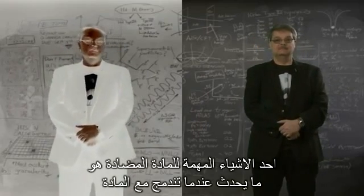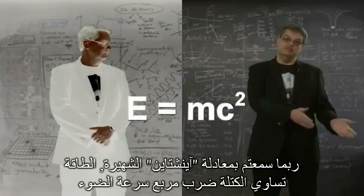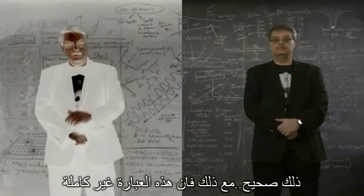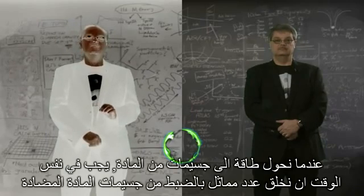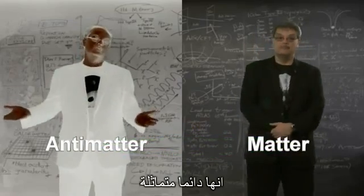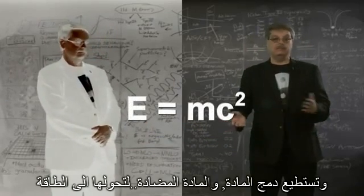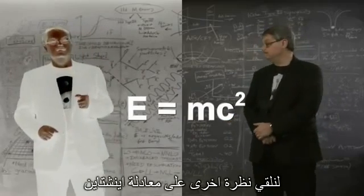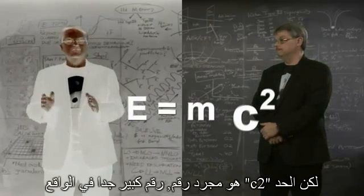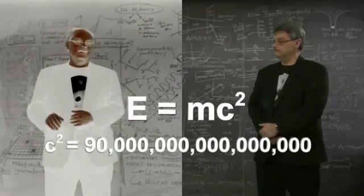One interesting thing about antimatter is what happens when it combines with matter — that's when things get exciting. You've probably heard Einstein's famous equation E equals mc squared. If you've cared to dig into what it means, you've heard that energy is equivalent to matter and vice versa. And that's true. However, that statement is incomplete. When we convert energy into a particle of matter, we must at the same time create an identical number of particles of antimatter. It's always the same. So what Einstein's equation means is that you can convert energy to matter and antimatter, and you can combine matter and antimatter to make energy. Now let's take another look at Einstein's equation. E stands for energy, m stands for mass, but the c squared term is just a number — actually a very big number. In the usual metric system, it is a 9 followed by 16 zeros. This means a little mass is a lot of energy.